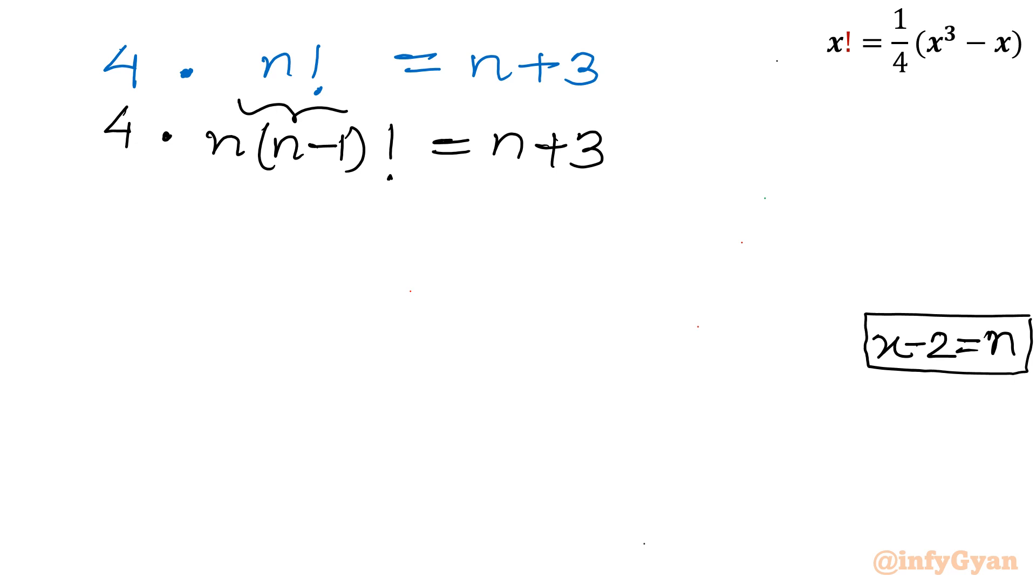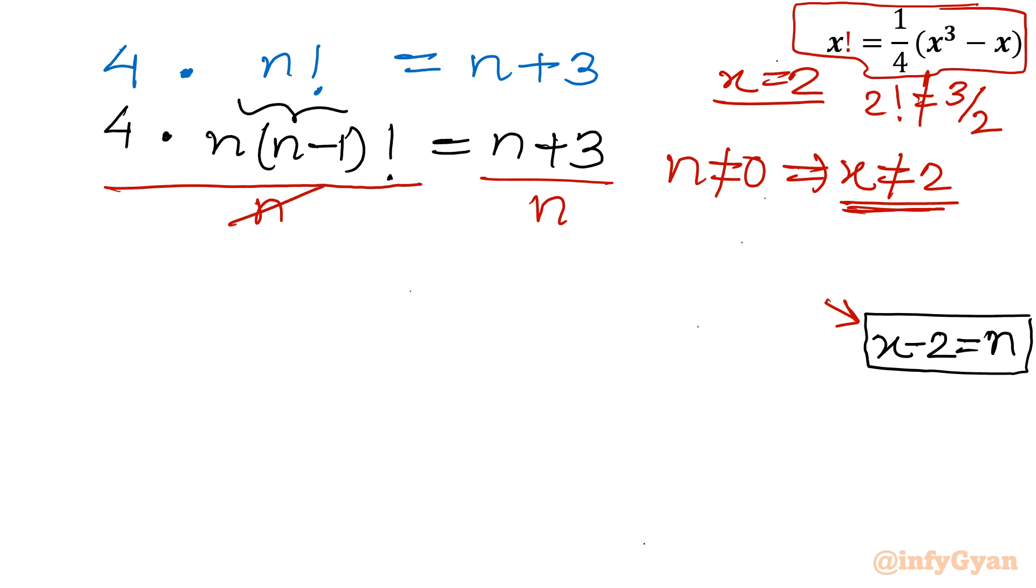Now I can divide both sides with n. Is it possible? Yes, we can divide both sides with n, but make sure n should not be equal to 0, that means x should not be equal to 2. Let us check what happens at x equal to 2. Left hand side is 2 factorial equals 2, right hand side is 8 minus 2 over 4, equals 6 over 4, equals 3 over 2, which is not true. That means x cannot be equal to 2 for the original equation, so we can divide both sides with n. So what is left? 4 times n minus 1 factorial equal to 1 plus 3 over n.